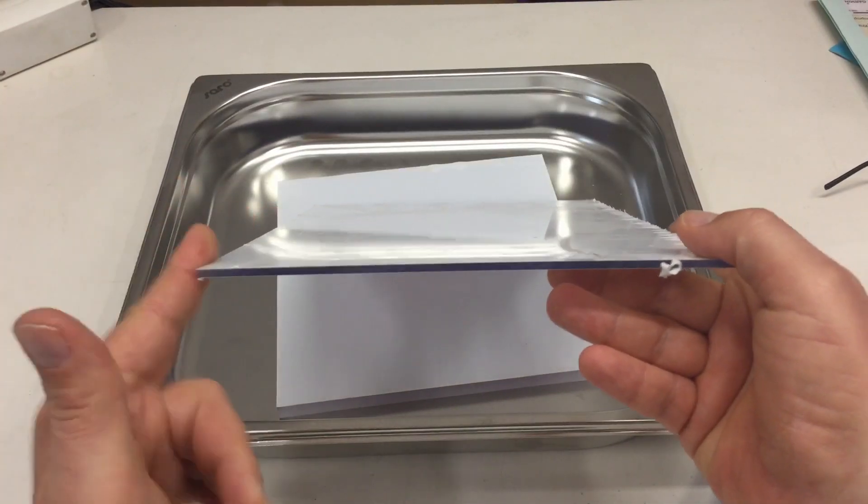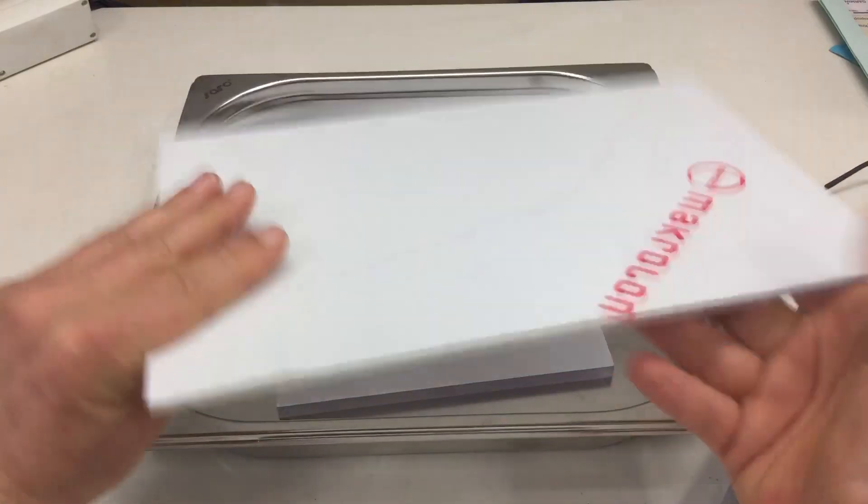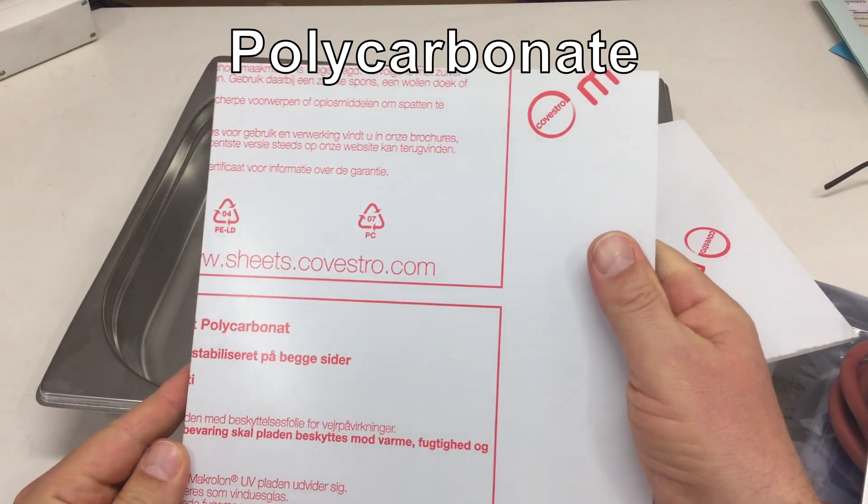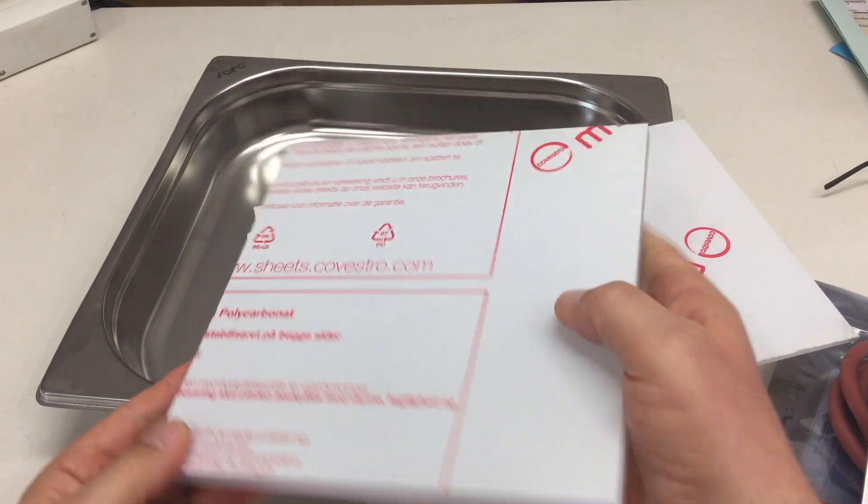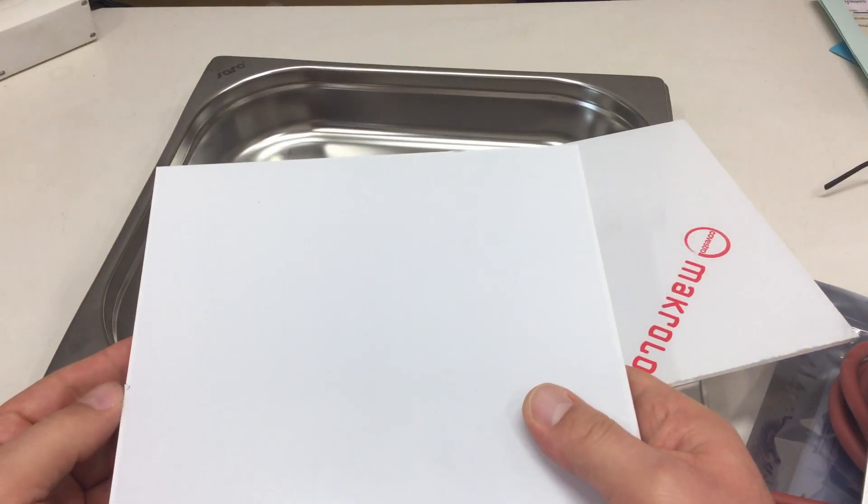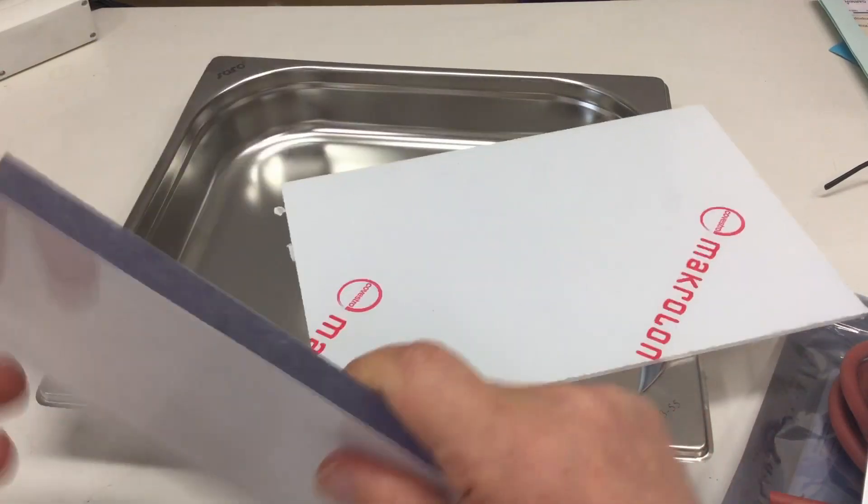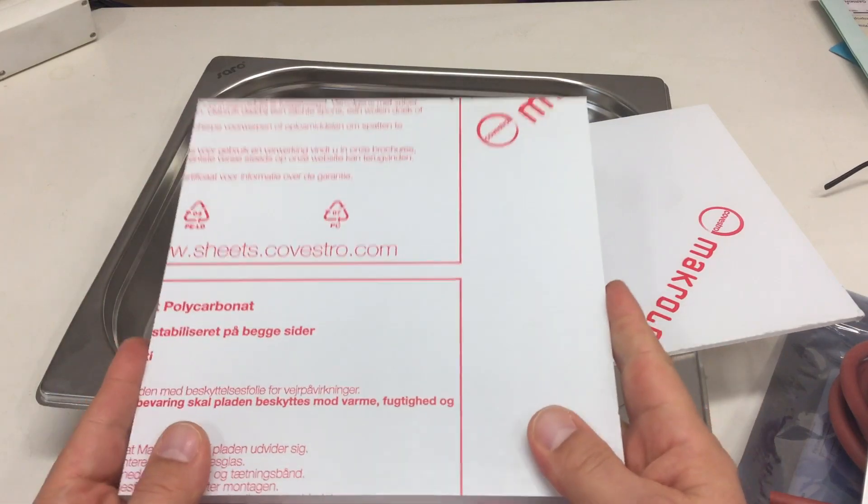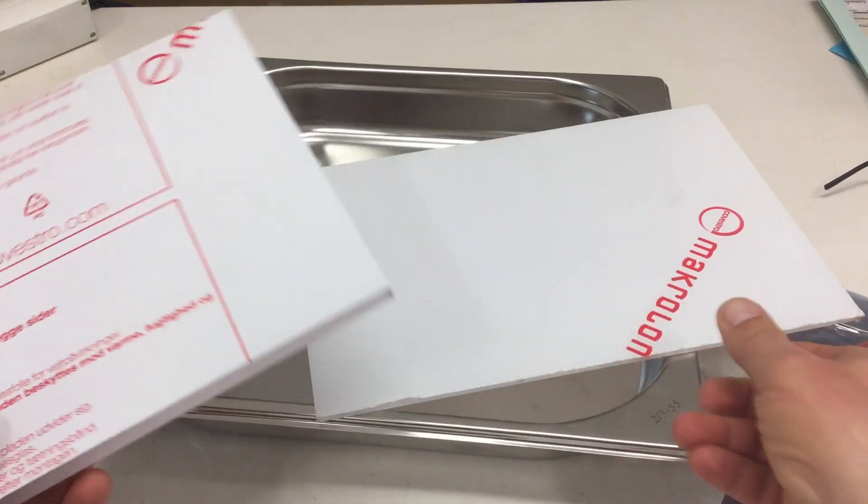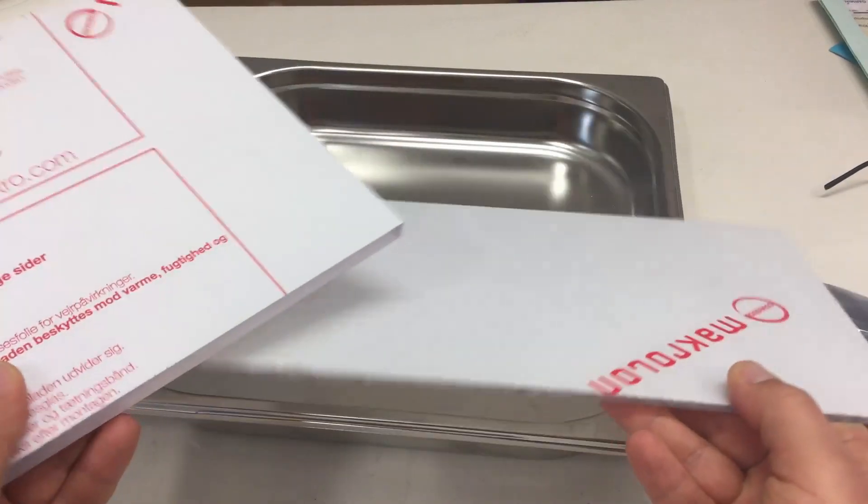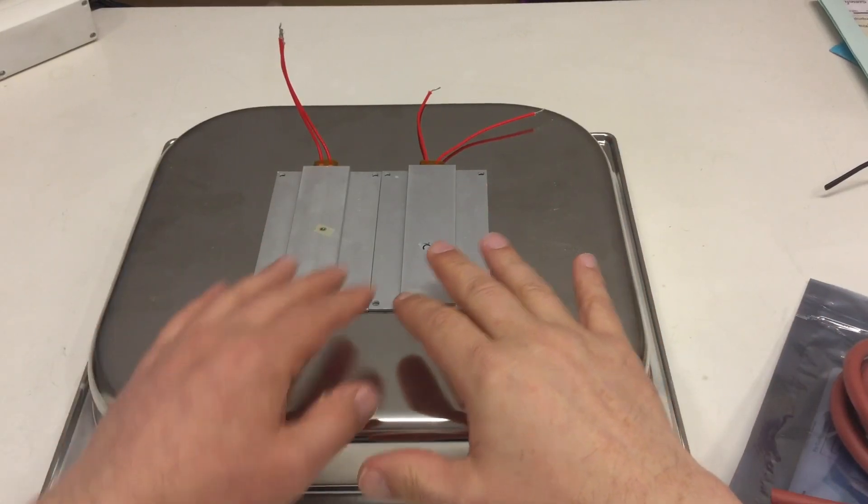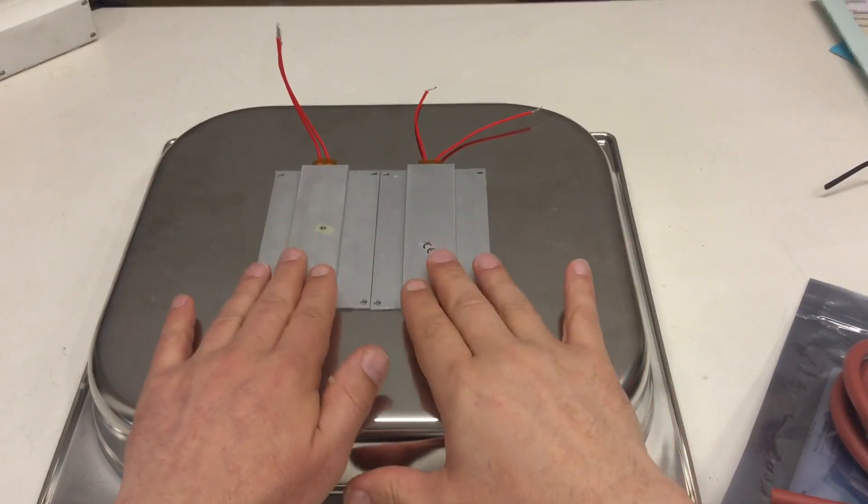And I have here, this is three millimeter Macrolon or polycarbonate sheet. That's good, it's transparent - that was the cheapest, it's not white, this is just some foil on it. But that is also good up to 125 degrees Celsius.